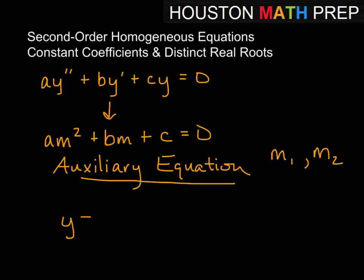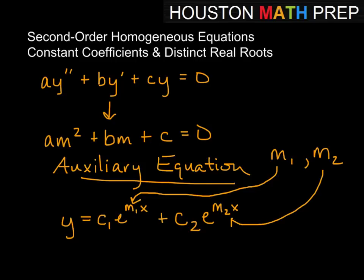Then what we're going to get for our solution will be that y = c₁e^(m₁x) + c₂e^(m₂x). That's going to be the general form for our answer. The idea is whatever we get for our distinct real numbers for the values of m are going to go in as constant multiples of x inside of our exponential.